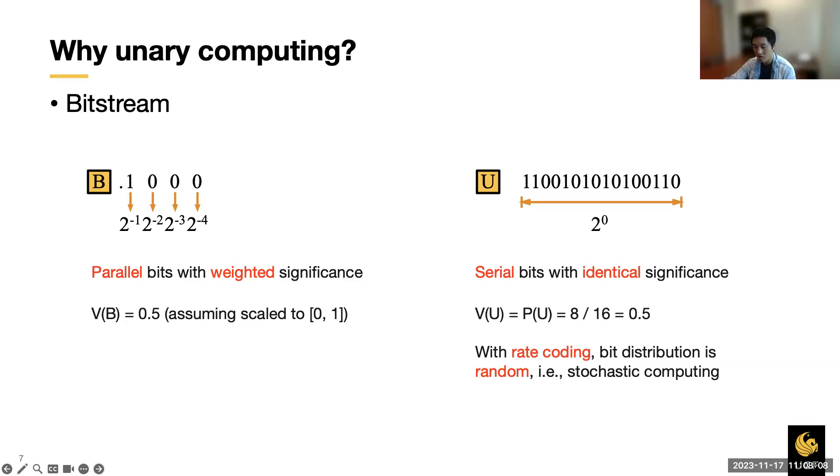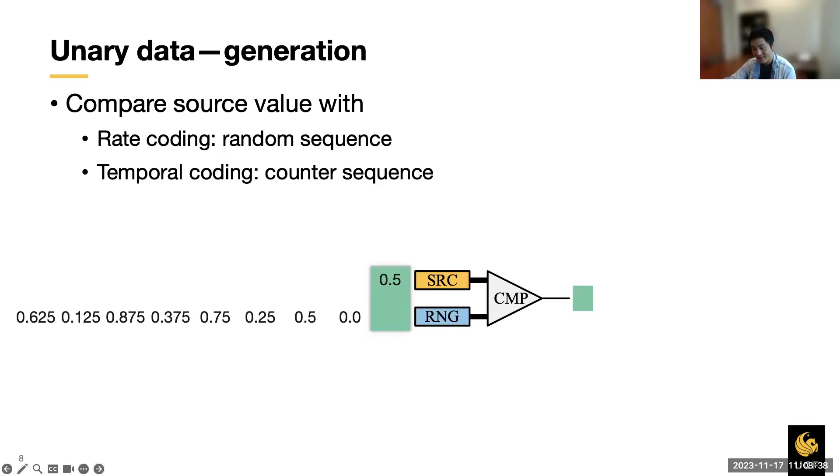This encoding of unary data is known as rate coding, where the bits are randomly distributed. This is also more commonly referred to as stochastic computing. In addition, temporal coding is another kind of popular unary encoding, where the zeros are deterministically following ones, as shown on the right. Dr. Najafi called it unary processing in early times. Different people had different names.